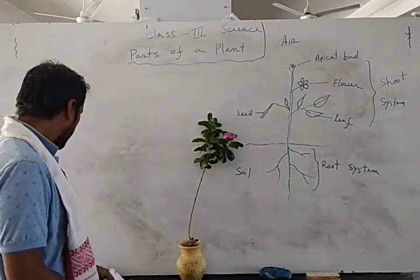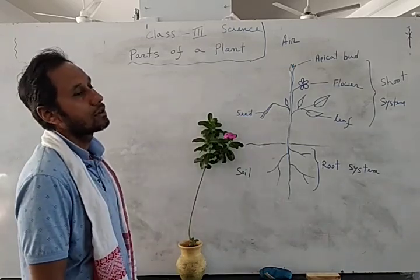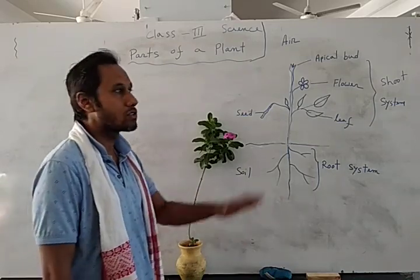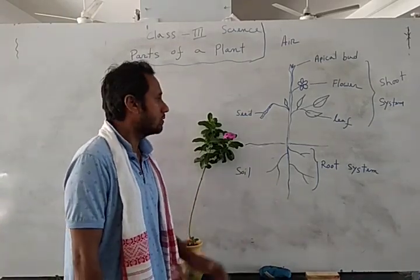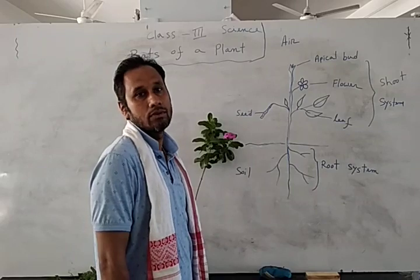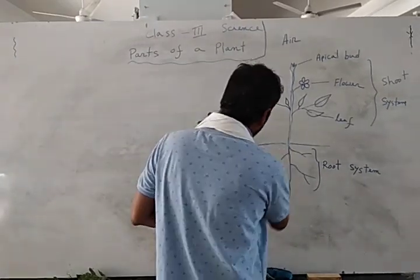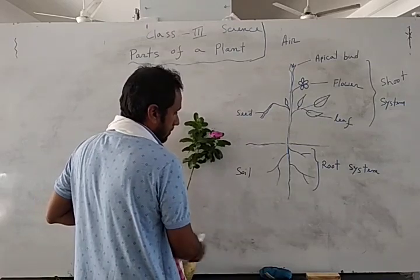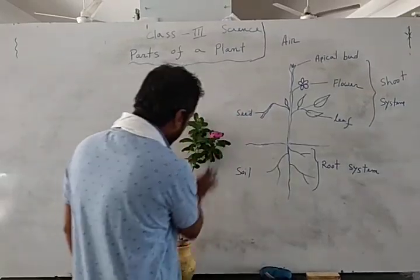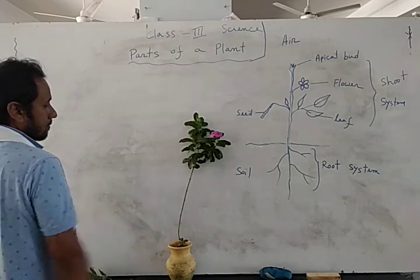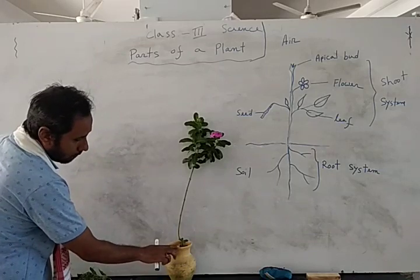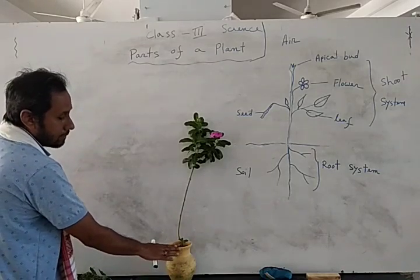As you know, all around your outside, when you go from inside your home to outside, you can see lots of plants growing around us. As a whole, a plant has mainly two parts. One part grows under the soil, and one part grows above the soil.